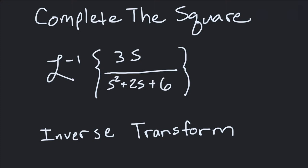Today we're going to look at using the completion of a square to find the inverse Laplace transform of this function, specifically 3s over s squared plus 2s plus 6.